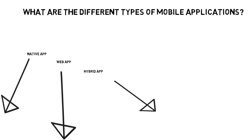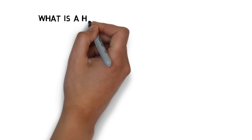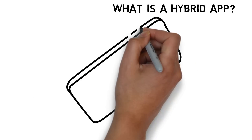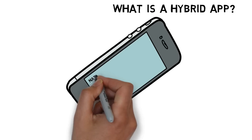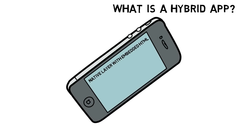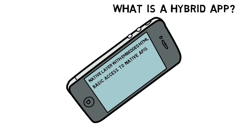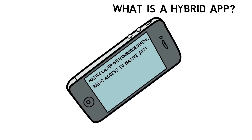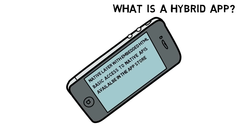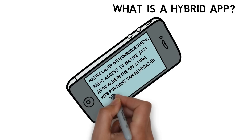Next up is the hybrid app. What is a hybrid app? It has a native layer with embedded HTML, basic access to the native APIs, it is available in the app stores, and the web portions of it can be updated server-side.